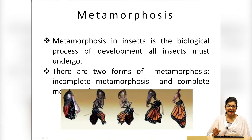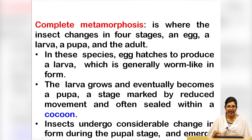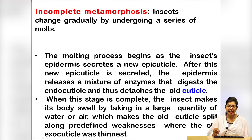Metamorphosis in insects is the biological process of development that all insects must undergo; it is a crucial step in an insect's life. There are two types of metamorphosis observed in insects: incomplete metamorphosis and complete metamorphosis. In complete metamorphosis, we have four stages — egg, larva, pupa, and adult. In incomplete metamorphosis, there is a series of gradual molts.